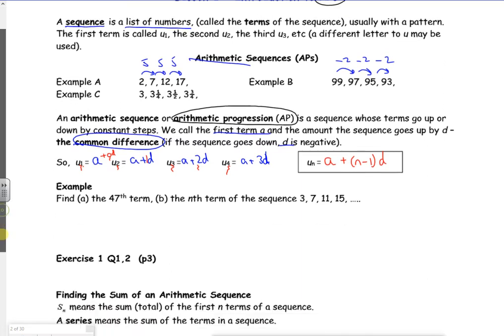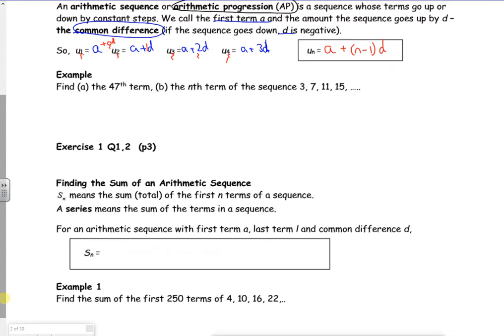Right, let's have a look then. So it says find the 47th term and the nth term in this sequence. Right, so A is 3. They're going up by 4 every time. So D is 4. For part A, N is 47. So the 47th term will be U47 is A, which is 3, plus 47 minus 1, lots of 4. So U47, according to the completed pack, is 187 there.